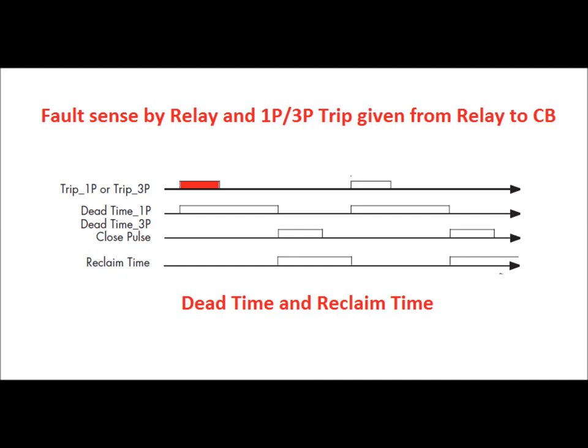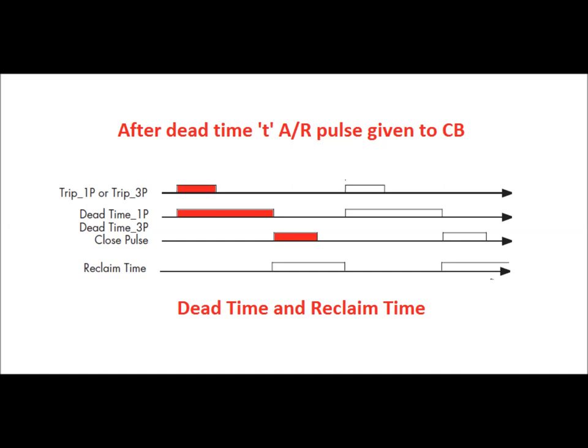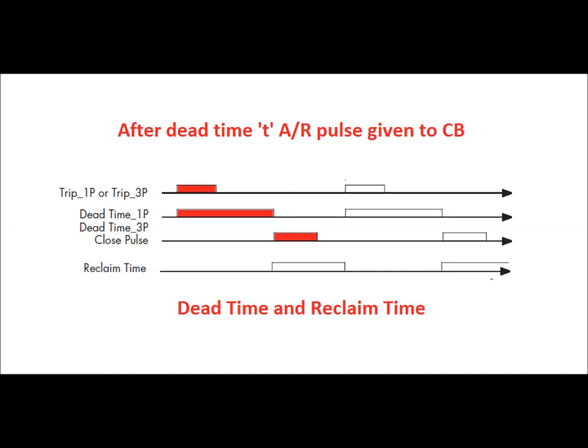Now let us discuss the auto reclose cycle — dead time and reclaim time — using a graphical representation. A single-pole or three-pole trip is issued from the distance relay, shown in red. After the dead time, a close pulse is sent from the distance relay, also shown in red. As soon as the close pulse is given, the reclaim time starts. If any fault is detected by the distance relay during reclaim time, a trip-on-reclose (TOR) is issued. After the reclaim time is over, if a fault is detected, a single-pole or three-pole trip occurs based on the relay settings.